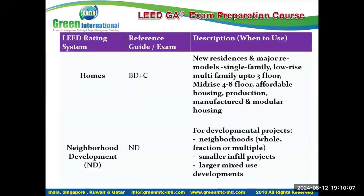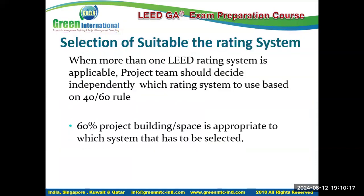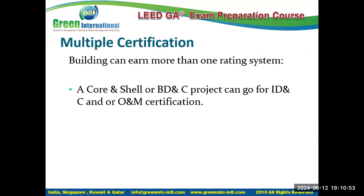For mixed-use buildings — for example, commercial on lower floors and residential above — you apply the 60/40 rule. When more than one LEED rating system is applicable, the project team independently decides based on which rating system applies to 60% or more of the building area or space.